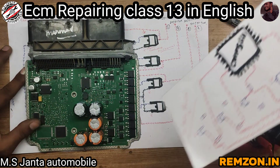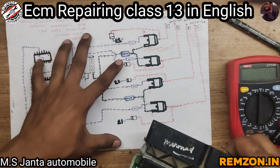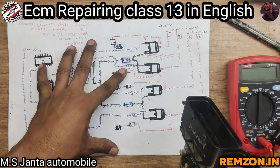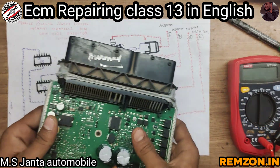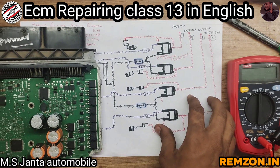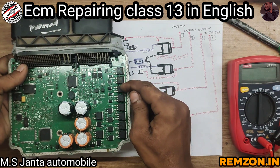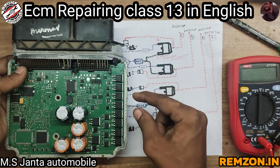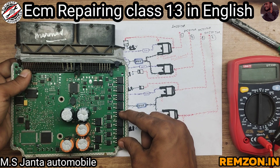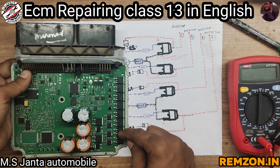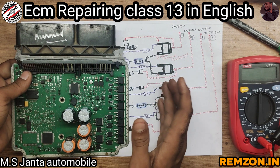I am going to explain all the things about the injector sections. If I make some mistake, please comment and guide me so I can improve myself. As you can see, I have drawn a diagram the same as the ECM. Here are one, two, three, four — these four are N-channel MOSFETs. These four are also N-channel MOSFETs but used for the high side injector section, and these are used for the low side injector section.